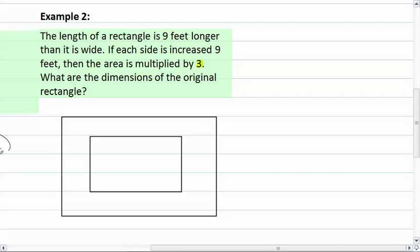In example two, we have the length of a rectangle is nine feet longer than it is wide. If each side is increased by nine feet, then the area is multiplied by three. What are the dimensions of the original rectangle?